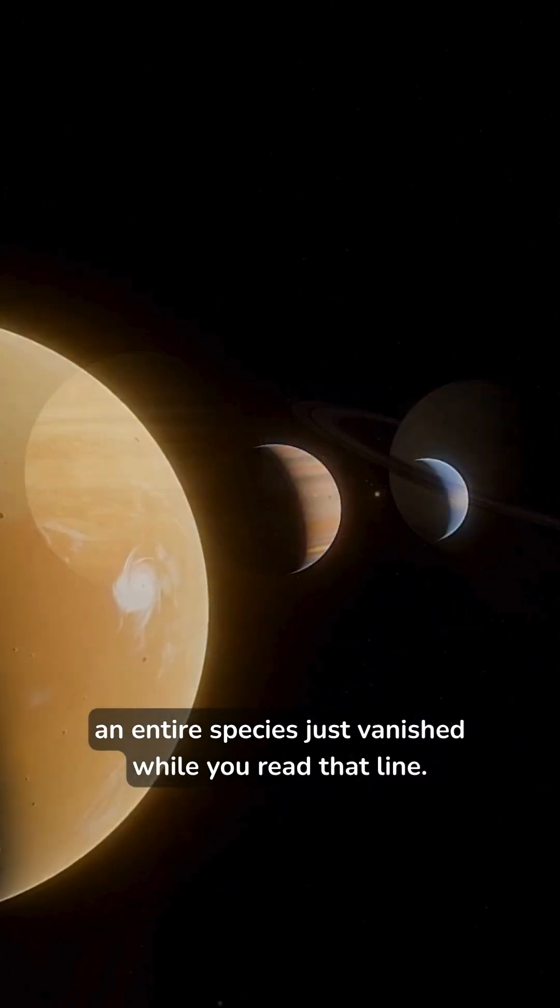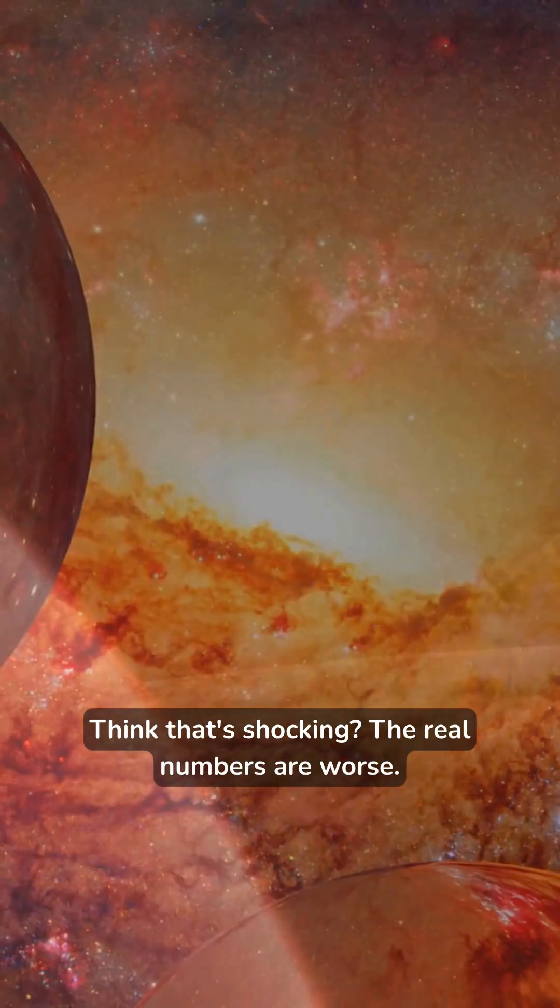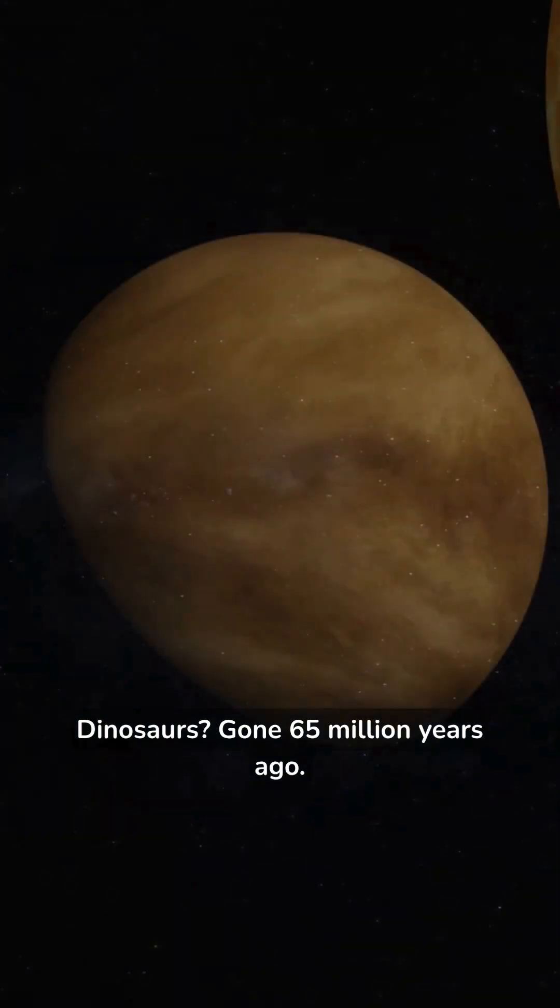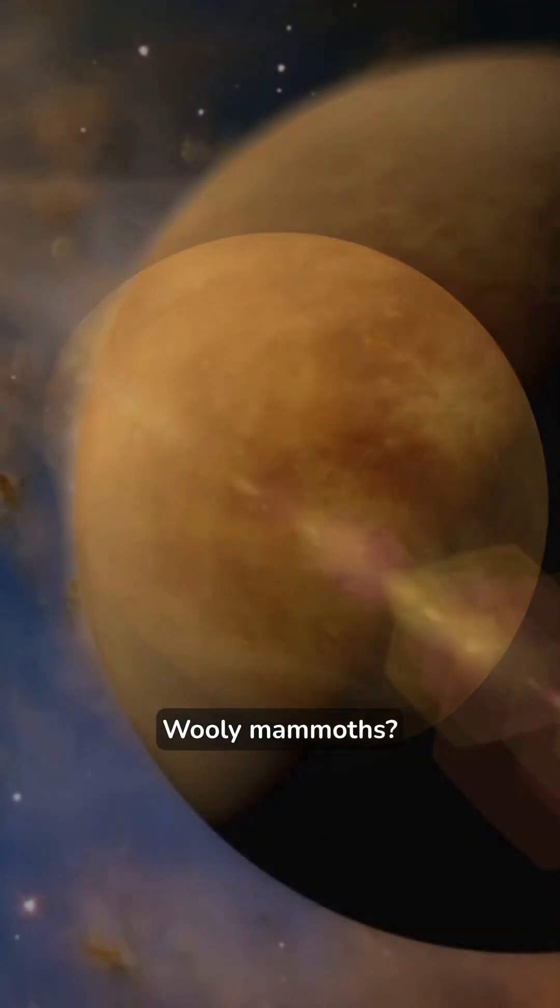This is why you need to look closer at our solar system. Those planets, they're hiding wild secrets. Let's blow your mind in 60 seconds. First up, Venus spins backwards. Yeah, it's the only planet that does that, like it's moonwalking through space.